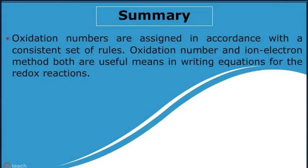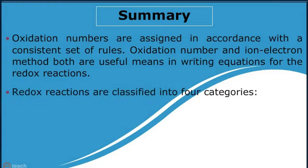Oxidation numbers are assigned in accordance with a consistent set of rules. Oxidation number and ion-electron method both are useful means in writing equations for the redox reactions.